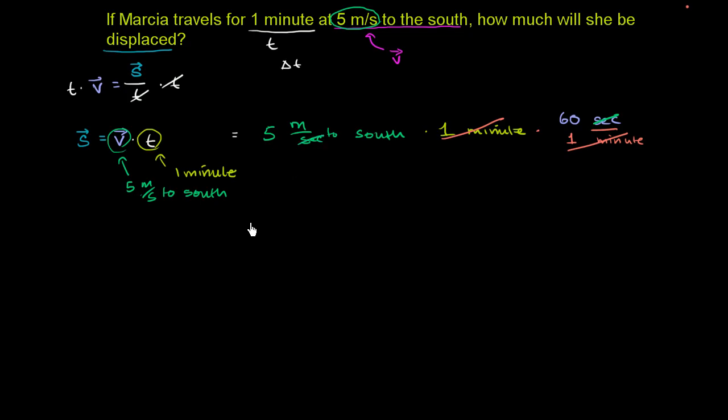And so your displacement is going to be equal to 5 times 60, and then your units left are meters. All the time units have canceled out, and then it's meters to the south. This is equal to 300 meters to the south, and we are done. That's how much she has been displaced. If they just wanted the distance, you could say that she traveled 300 meters. The magnitude of the displacement, that is the distance that she traveled.